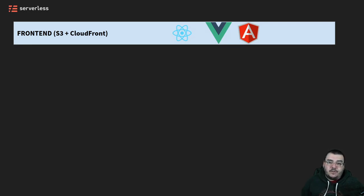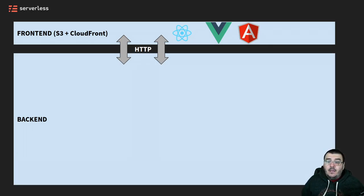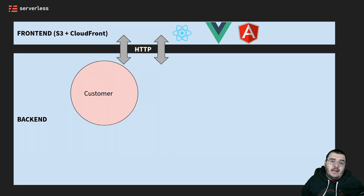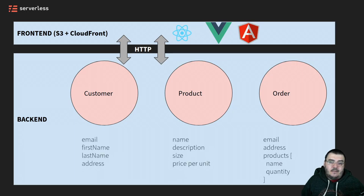We need our back-end, and this is where we're going to be focusing on with our microservices. Our front-end will be communicating with our back-end over HTTP with a RESTful API. In our back-end, we've got a customer, a product, and an order service. Our basic application is an order management system where we have customers, products, and orders, and we need to maintain the state of these entities. Each of these has some basic data about the entities we'll need to maintain.